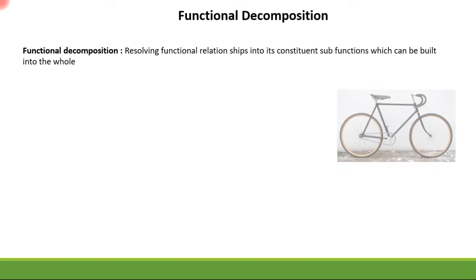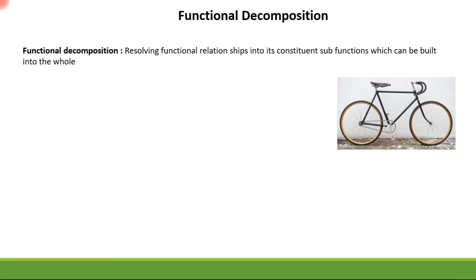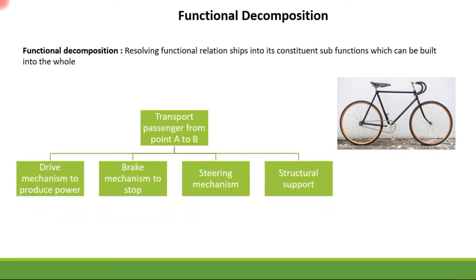If we take the bicycle as an example, the bicycle has several sub-functions. The primary function is to transport a passenger from point A to point B. This function can then be subdivided into sub-functions: the drive mechanism to produce power, the brake mechanism to stop, a mechanism to steer the bicycle, and finally the structural support to bear the weight of the person.